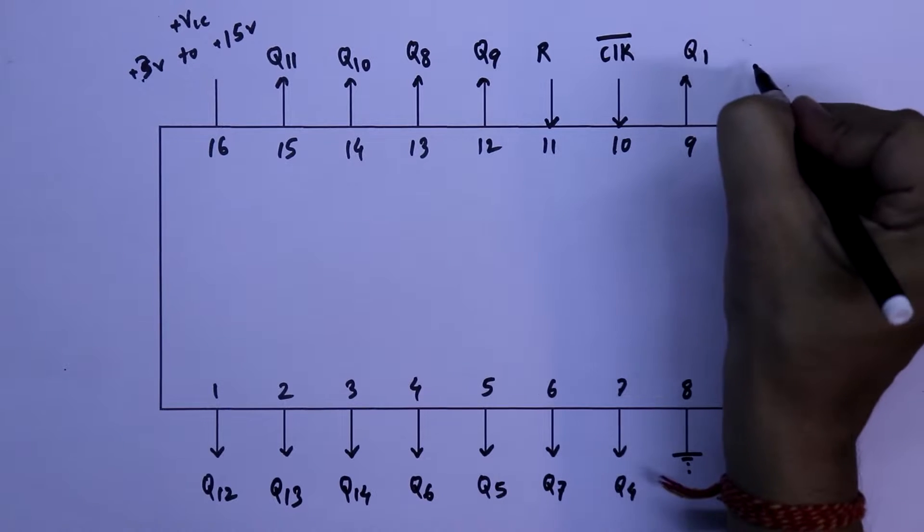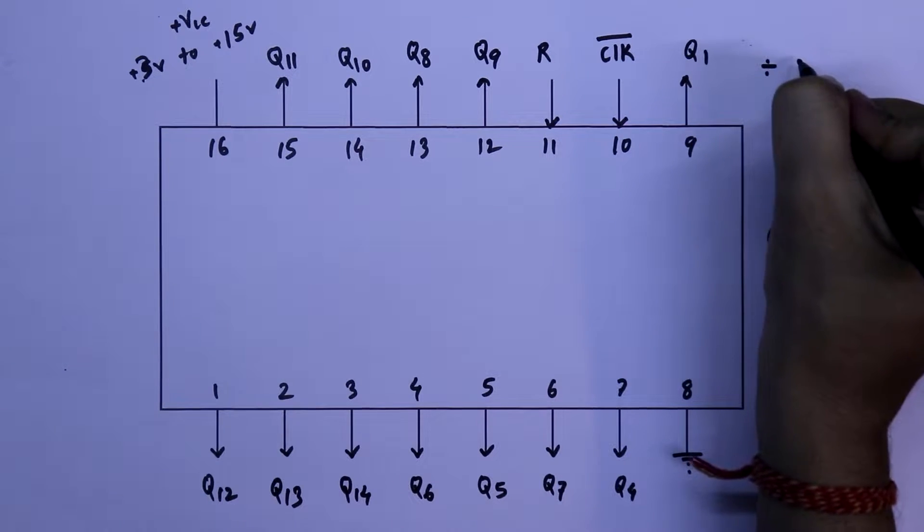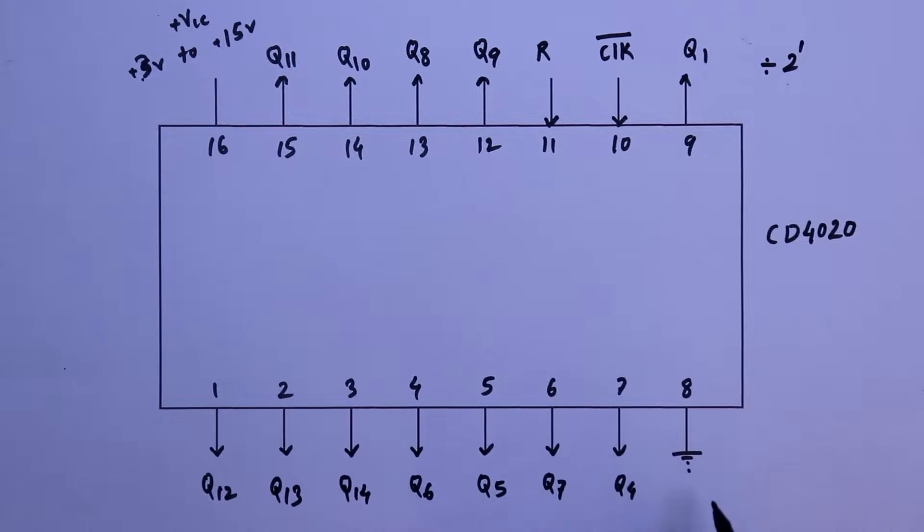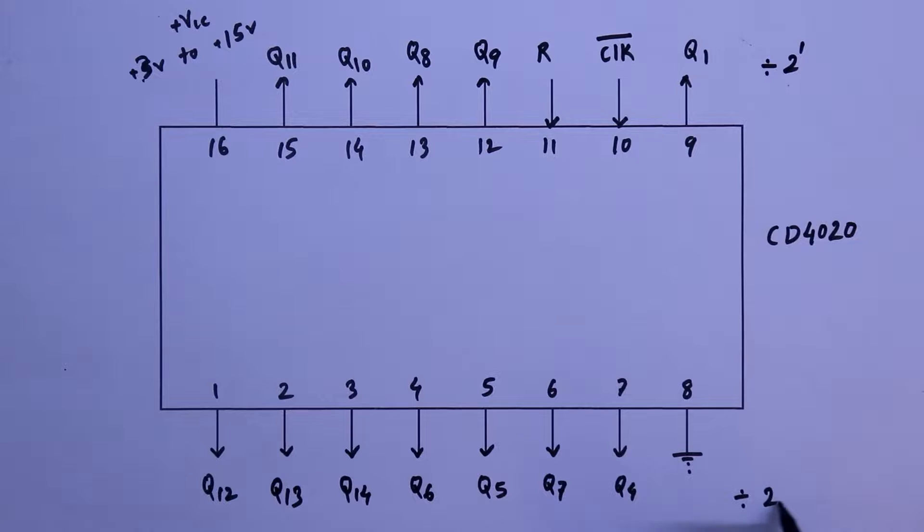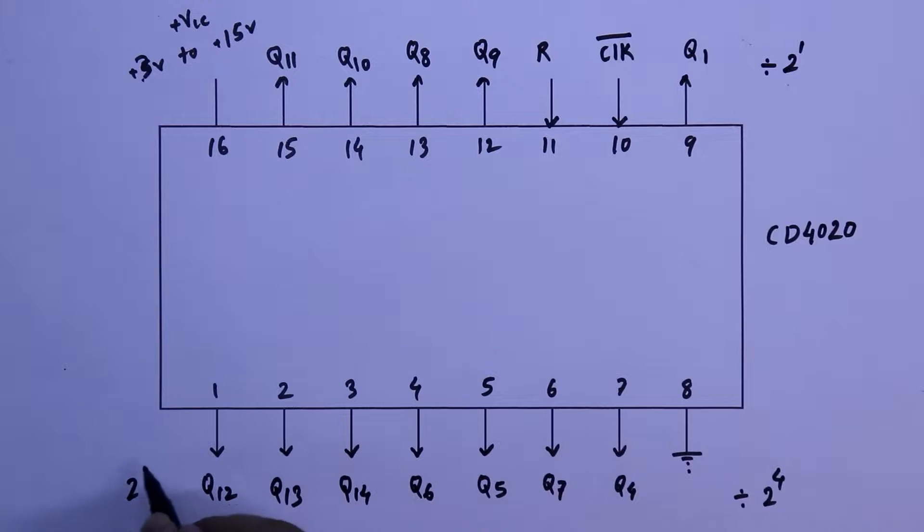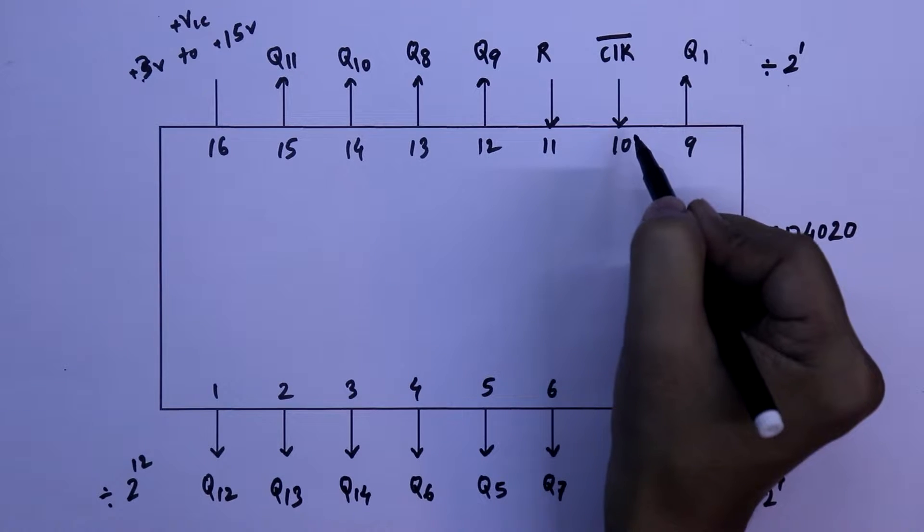Q1 means divided by 2 to the power 1. Q4 means divided by 2 to the power 4. Q12 means divided by 2 to the power 12. What frequency we are going to divide the input frequency.